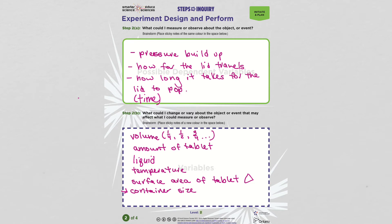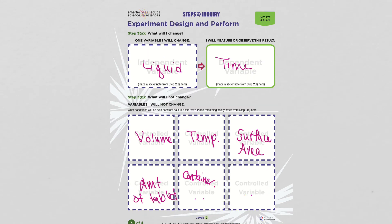So imagine you're going to pick what you want to change. Maybe I've decided I want to change the liquid and I want to measure the time it takes for the lid to pop off. So now I'm going to set up my experiment. I'd write that down. The thing I'm changing is the liquid. That's the independent variable. And the time it takes for the lid to pop off is the dependent variable. So that's what I'm going to measure.